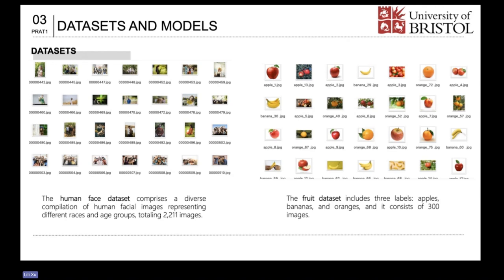Regarding the dataset, I collected two public datasets from Kaggle, a face dataset and a fruit dataset. The face dataset comprises a diverse compilation of human facial images representing different races and age groups. The fruit dataset includes three labels: apples, bananas, and oranges.